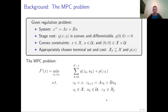Let's consider a regulation problem. We have a linear dynamical system with a convex and differentiable stage cost, which is zero at the origin. We also have convex constraints of a general kind, which contain the origin. Let's assume that the terminal cost and terminal set are chosen appropriately so they can provide closed-loop stability and recursive feasibility for the system. The MPC problem is formulated as finding a set of states and controls which will minimize the objective cost and satisfy the dynamics and inherent state and input constraints, with a terminal constraint and terminal cost.